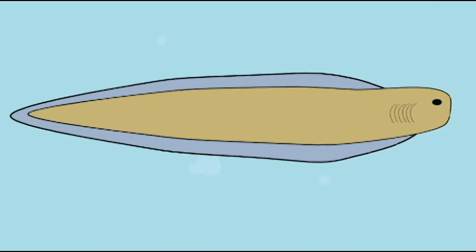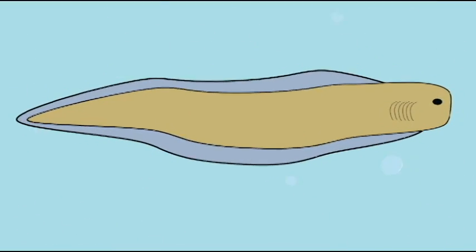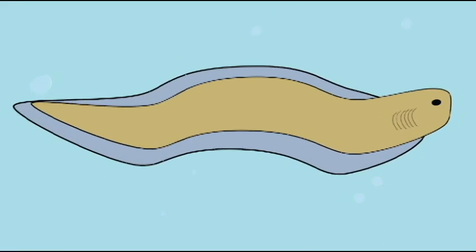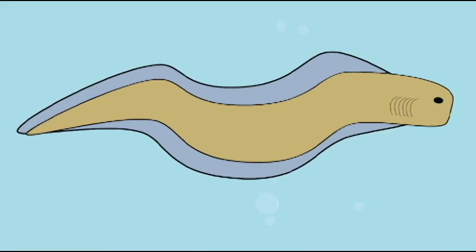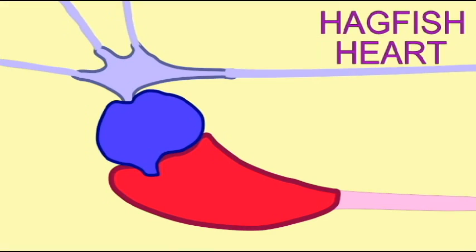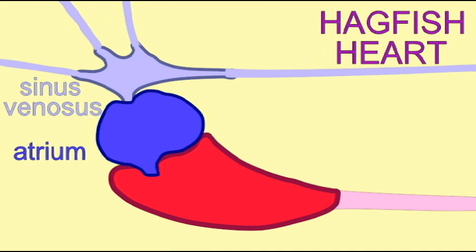However, over tens of millions of years, these jawless fish of the Cambrian evolved a number of traits which would be important for the higher vertebrates, which would come later. The size of their brain increased, and this included the formation of cerebral hemispheres and a more prominent cerebellum. The first fish apparently lacked cerebellum, as does the modern hagfish.